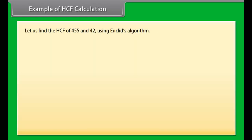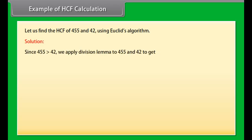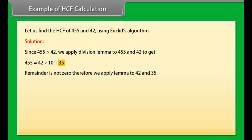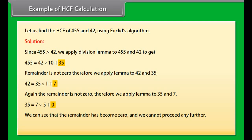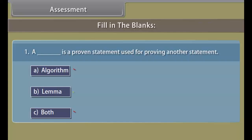Example: Find the HCF of 455 and 42 using Euclid's algorithm. Since 455 > 42, apply the division lemma: 455 = 42 × 10 + 35. Since remainder ≠ 0, apply lemma to 42 and 35: 42 = 35 × 1 + 7. Apply again to 35 and 7: 35 = 7 × 5 + 0. The remainder is now 0, so the HCF of 455 and 42 is the divisor at this stage, which is 7.